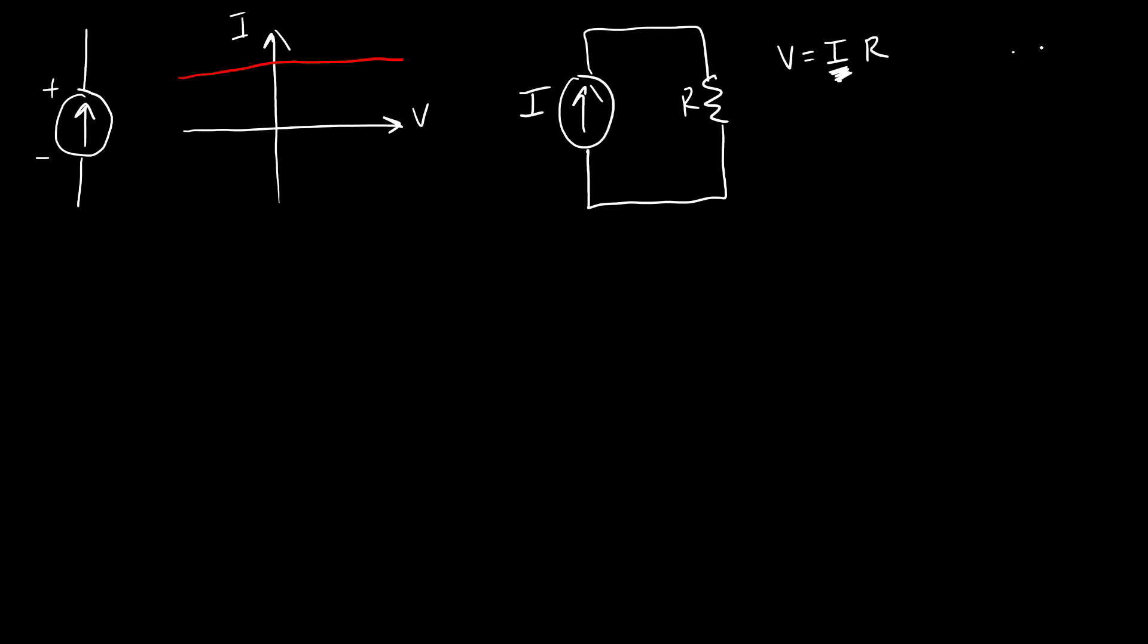Now, just like if you remember with a constant voltage source, if we short circuited that with R equals zero, then we would get an infinite current. In this case, if our resistance goes to infinity, then we are going to get an infinite voltage. And just like how it's not physically possible to get infinite current out of a practical voltage source like a battery, it's not possible to somehow get infinite voltage out of a practical current source. So we need a model of a practical current source that accounts for the physical limits of what it can really do.